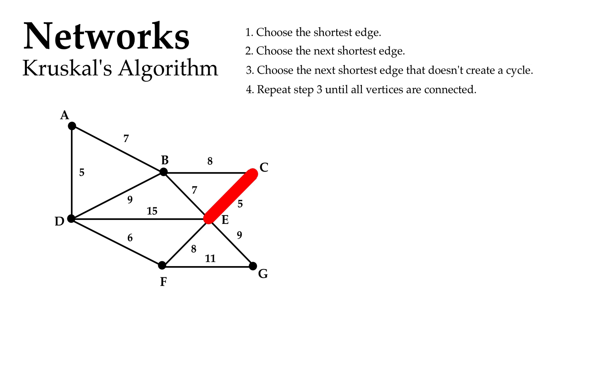We're going to keep choosing the shortest edge. The next shortest is a six. The next shortest is a seven—didn't matter which seven I chose. We're going to keep choosing until we've ticked off every vertex.